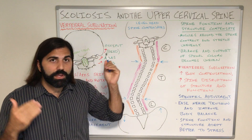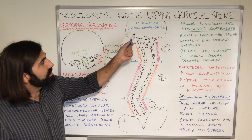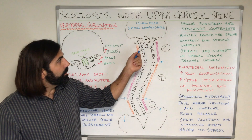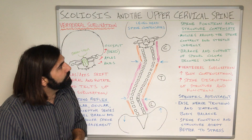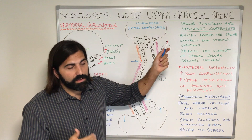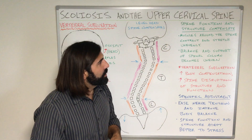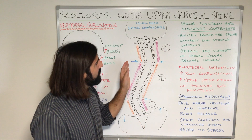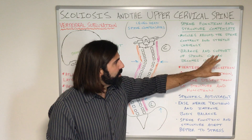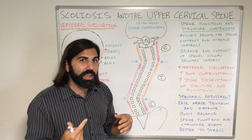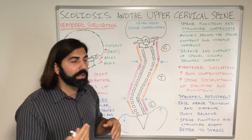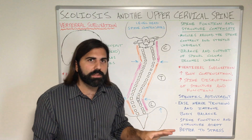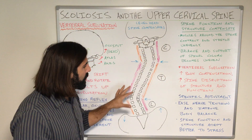The best way the brain does that is to engage the spinal muscles or paraspinal muscles found around our spinal column. As the head becomes level, our spine must compensate for the deviation in the biomechanics of the vertebral subluxation. As our spine's function and structure compensates, the muscles around the spine are going to contract and stretch unevenly, creating uneven balance and support of our spinal column, and we'll often see a similar pattern or presentation of these abnormal curves in our spine.